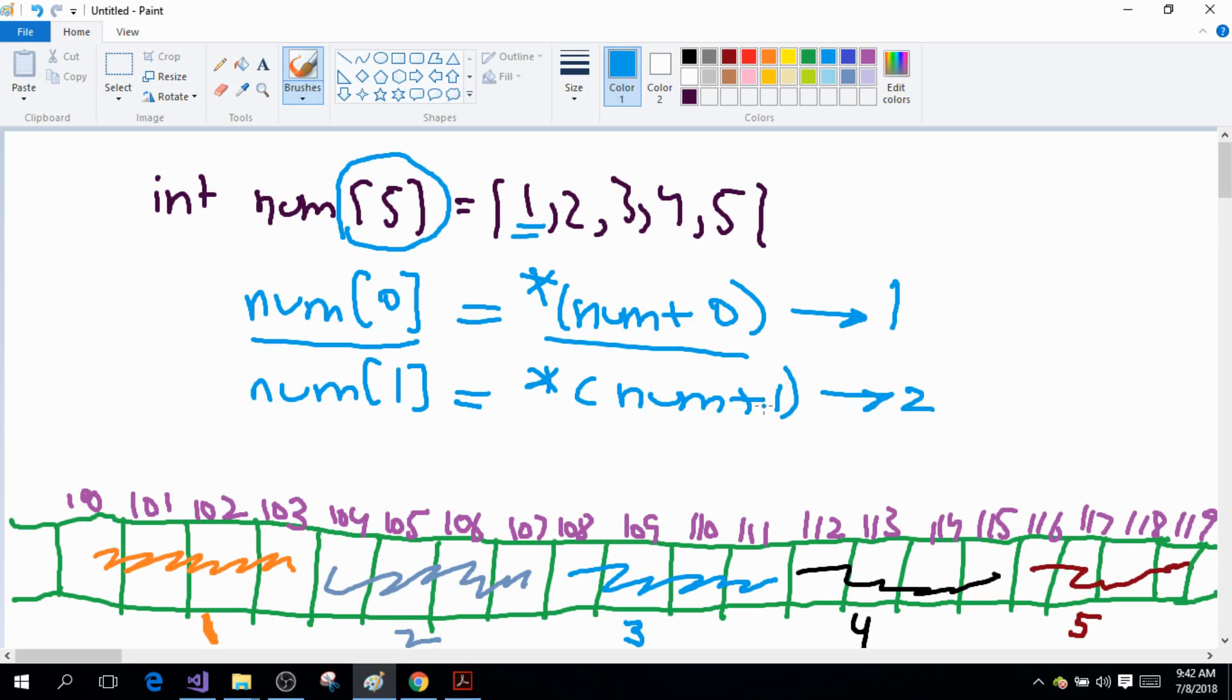We talked about this - we said that pointer arithmetic is not the same as variable or simple arithmetic. If you add 1 to an address, it will increment according to the size of the data type.